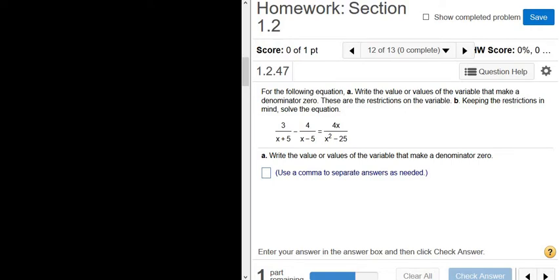So we have an equation. It's 3 over x plus 5 minus 4 over x minus 5, and that's equal to 4x over x squared minus 25.